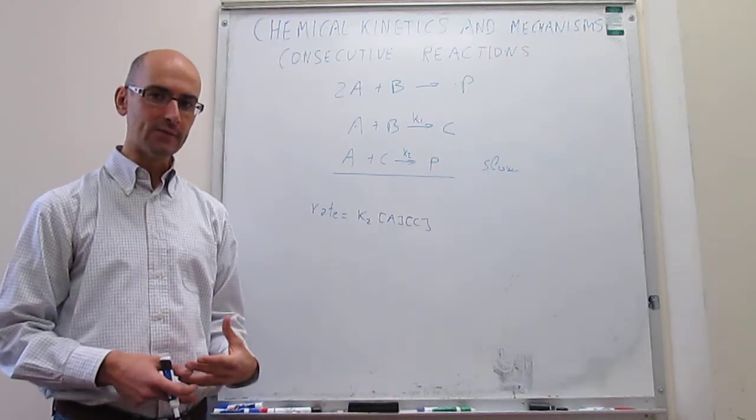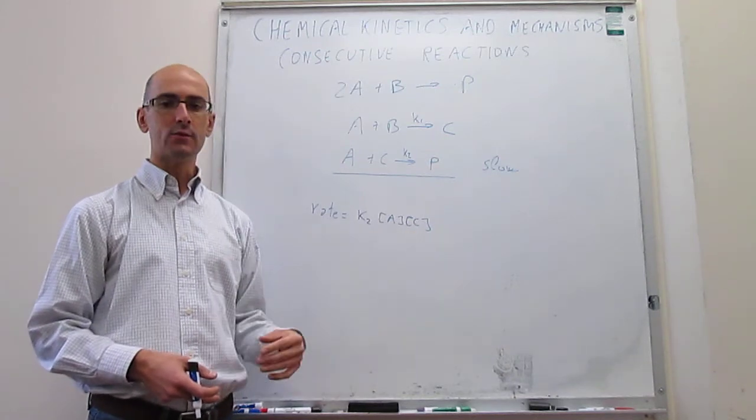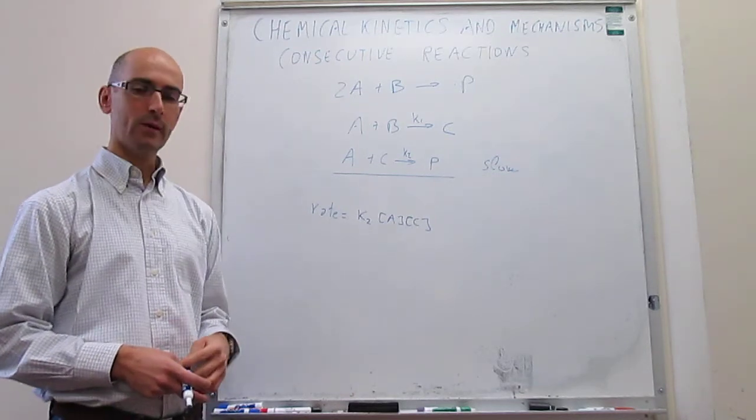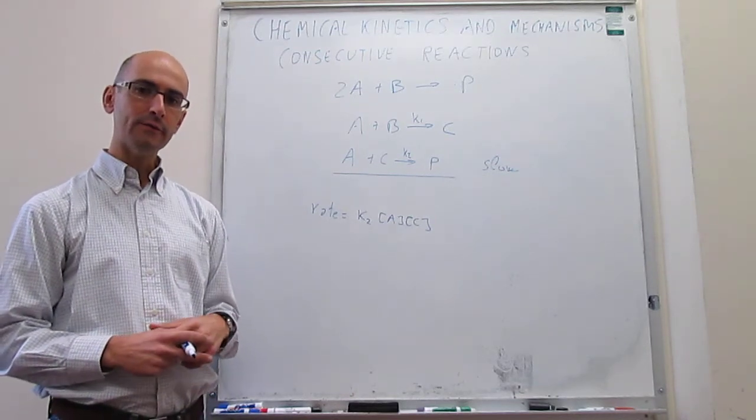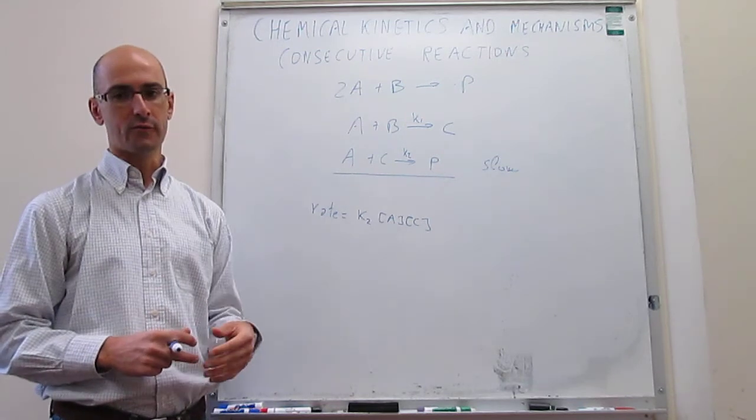But C cannot appear in the final rate law. And again, we're going to learn in the next videos how to look for ways to replace this or to place this as a function of the concentration of reagents or products. So this has been an overview of the rate determining step and its application to consecutive reactions.